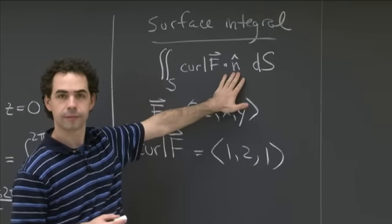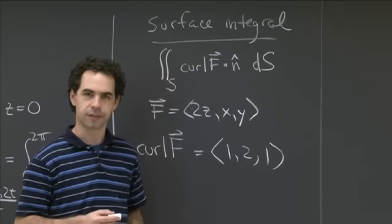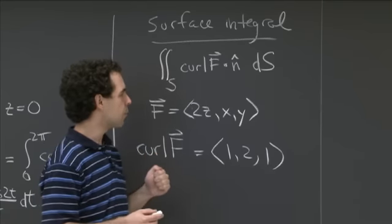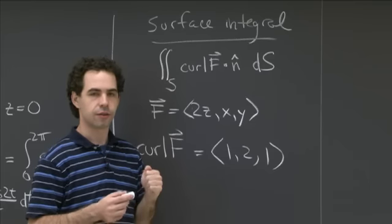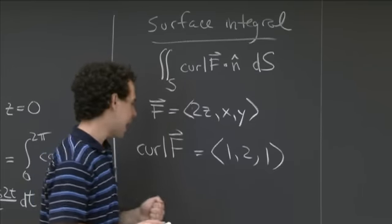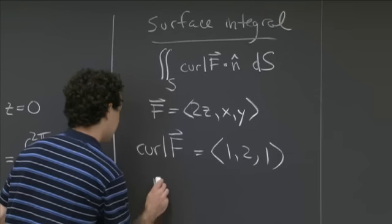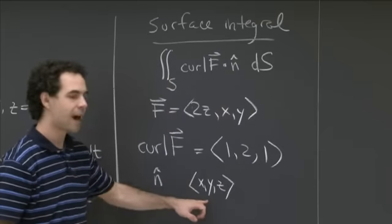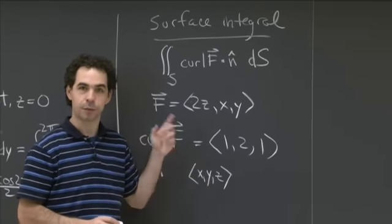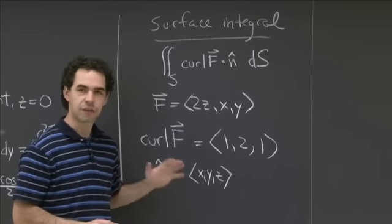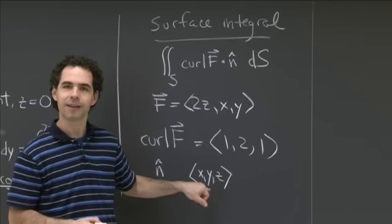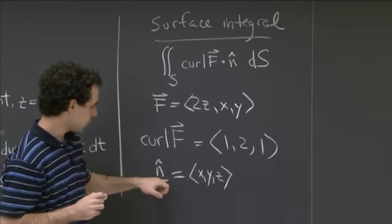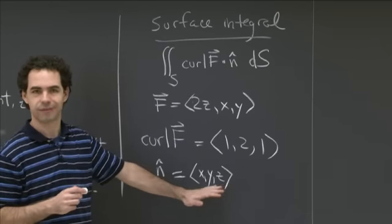Now we need the unit normal n. We said it was the outward-pointing normal. This is a sphere, so the normal is parallel to the position vector. That means n should be parallel to (x, y, z). And since we're on the unit sphere, the position vector already has length 1, so n = (x, y, z).